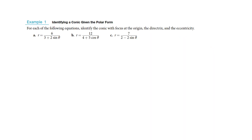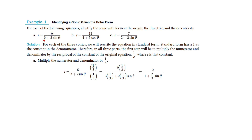First, we're going to identify the conic section in polar form. We don't have a 1 in the denominator here, so we need to create one. The trick is to multiply the top and bottom by one third — because multiplying through would create a 1 in the denominator, which is what we're looking for. So we multiply everything by one third and distribute to get our standard form.